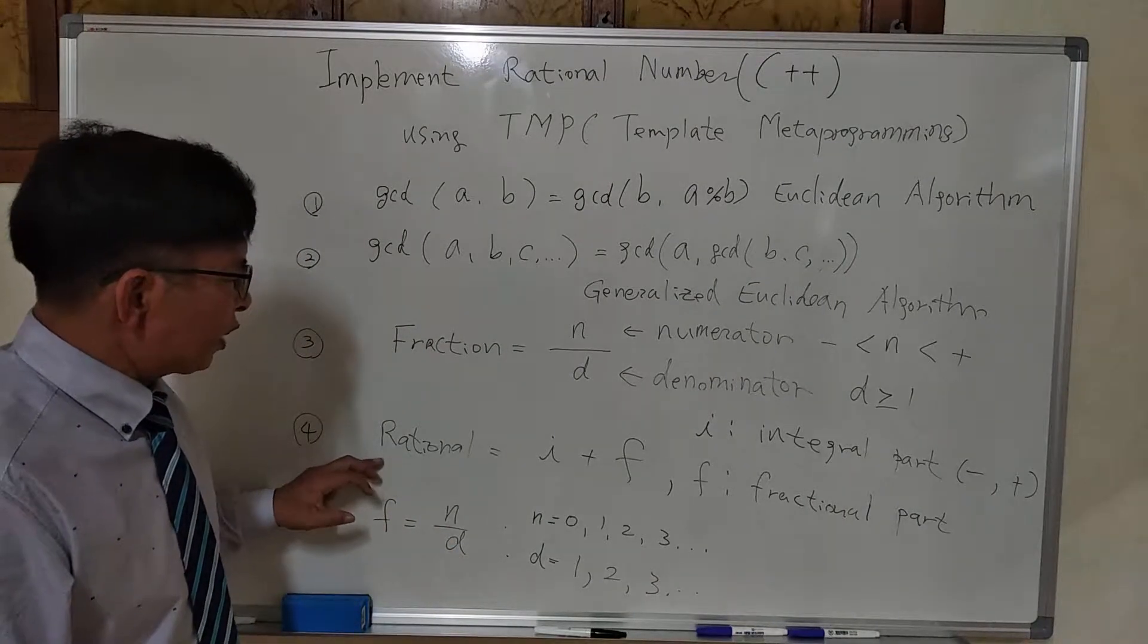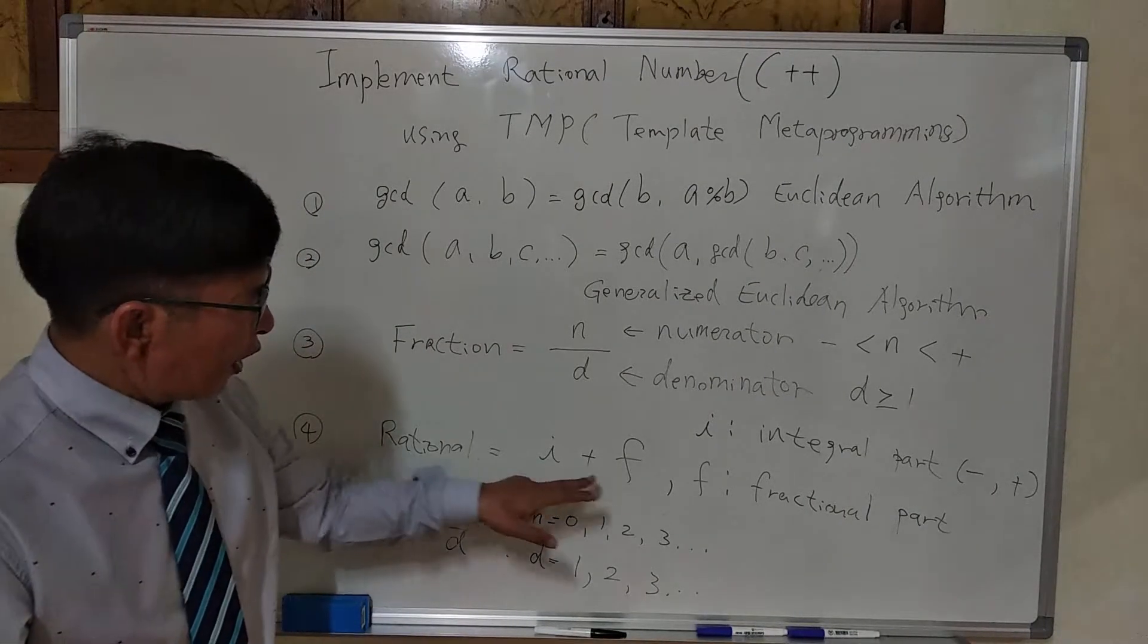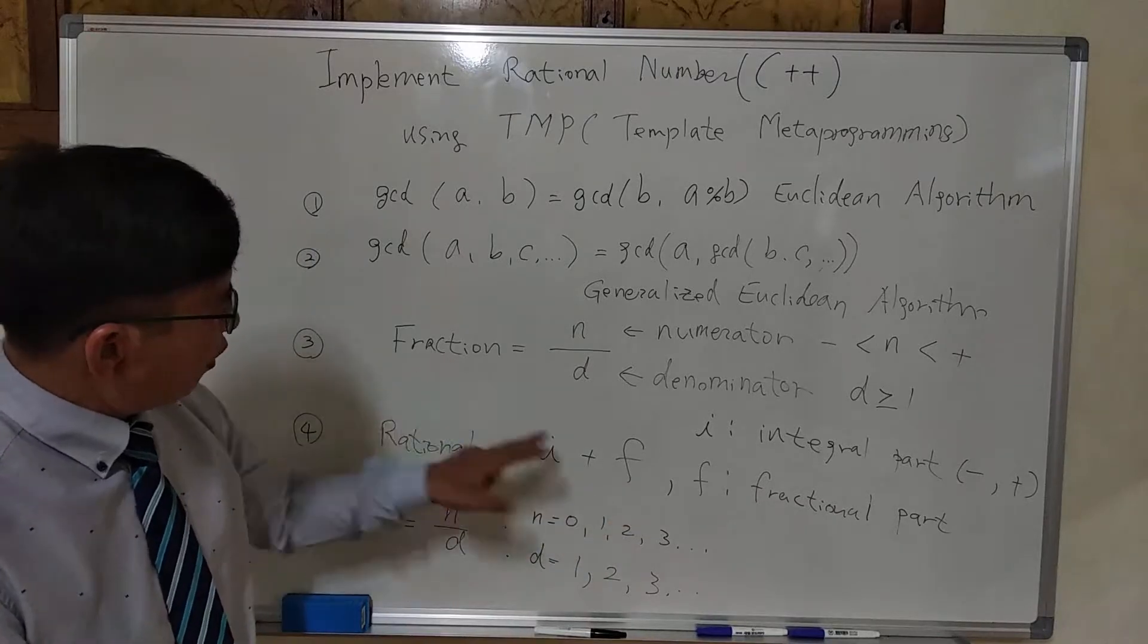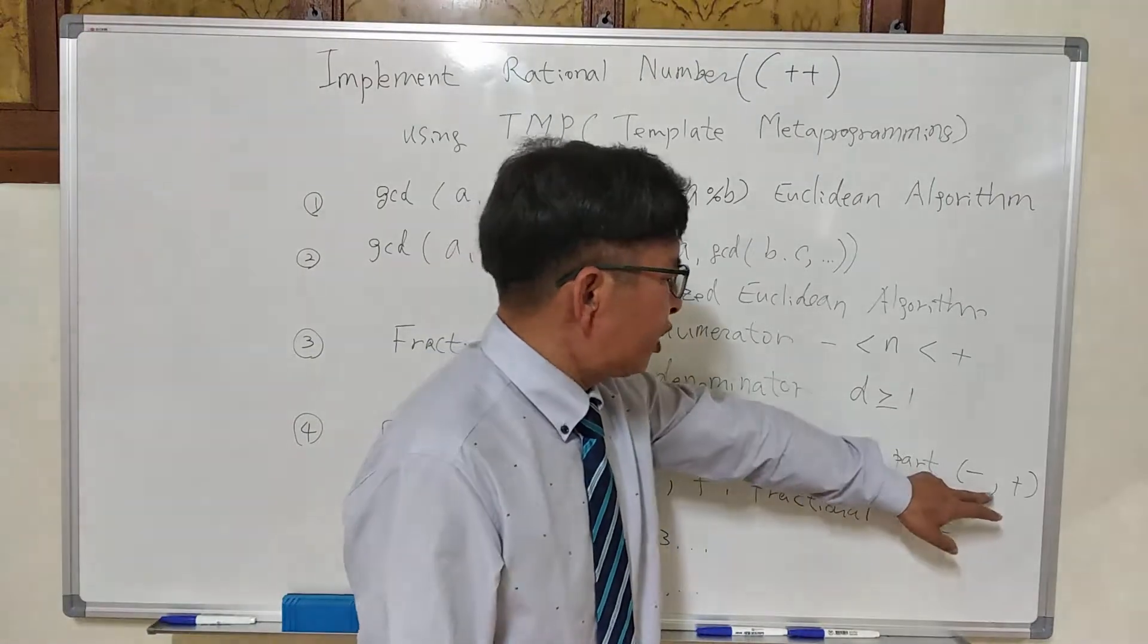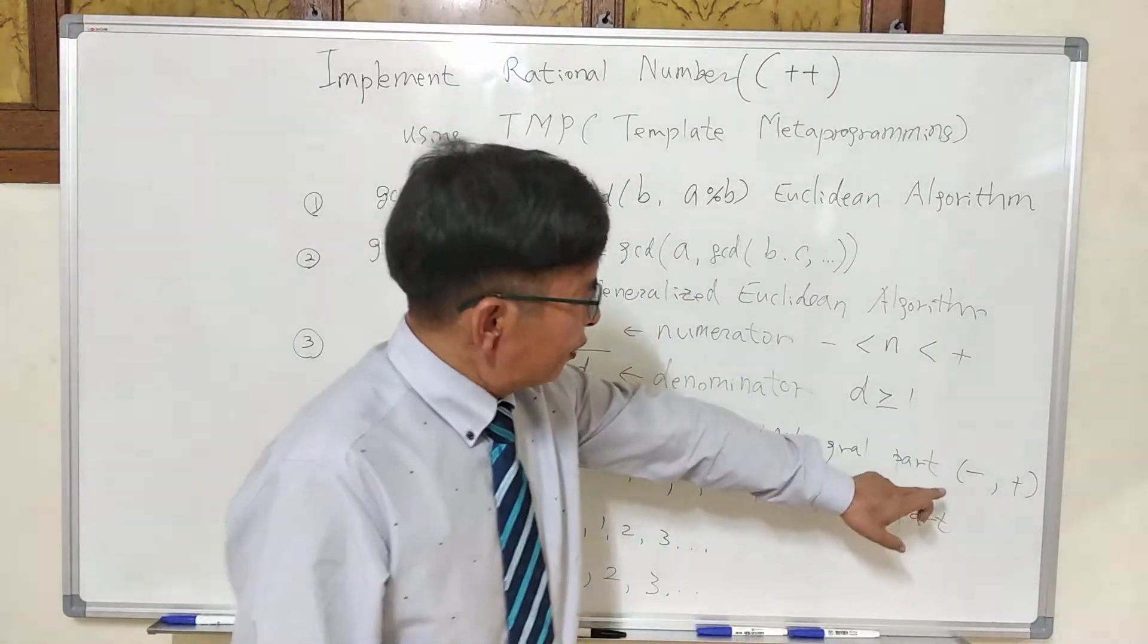And then we will implement the rational number with integer parts and fractional parts. This fractional part comes from here. And integer parts can be any integer type, negative or positive.